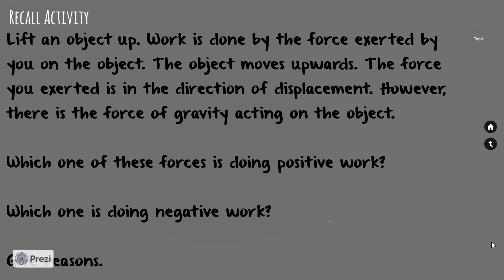For example, if you lift an object upward, work is done by the force you exert on the object. The object moves upward and the force you exerted is in the direction of displacement, so that is positive work. However, gravitational force acts downward while displacement is upward — those are in opposite directions — so the work done by gravity in this case is negative work.